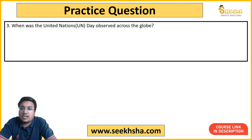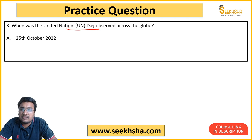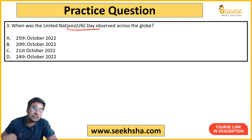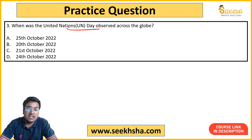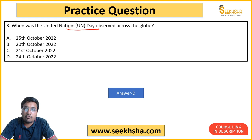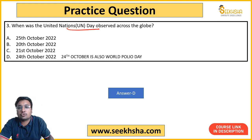Third question: When is United Nations Day observed? Options are 25th, 20th, 21st, or 24th. This is an important day and can be asked as a static question. The answer is 24th October. Also remember that World Polio Day is also celebrated on 24th October.